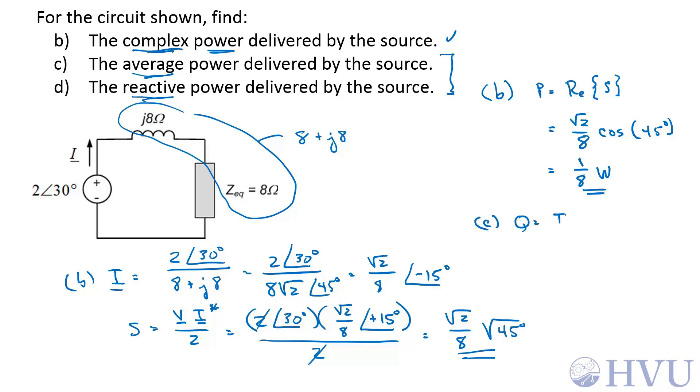For part D, Q is the imaginary part of S, which is going to be square root 2 over 8 times the sine of 45 degrees, which is also 1 eighth. Its units are volt amps reactive. The units for S which I accidentally left off are just volt amps.